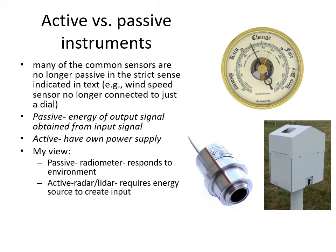The text makes a distinction between passive and active sensors — active as having its own power supply, and passive like an aneroid barometer where what you see is the response to pressure change. My view is that a passive sensor like a radiometer simply responds to the environment, while an active sensor requires an energy source to create the input being measured — like radar, lidar, or a soilometer — as opposed to a passive IR radiometer.